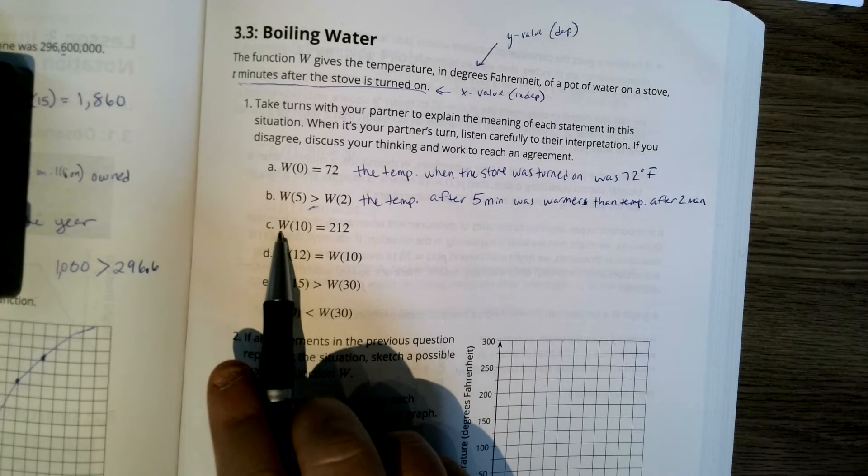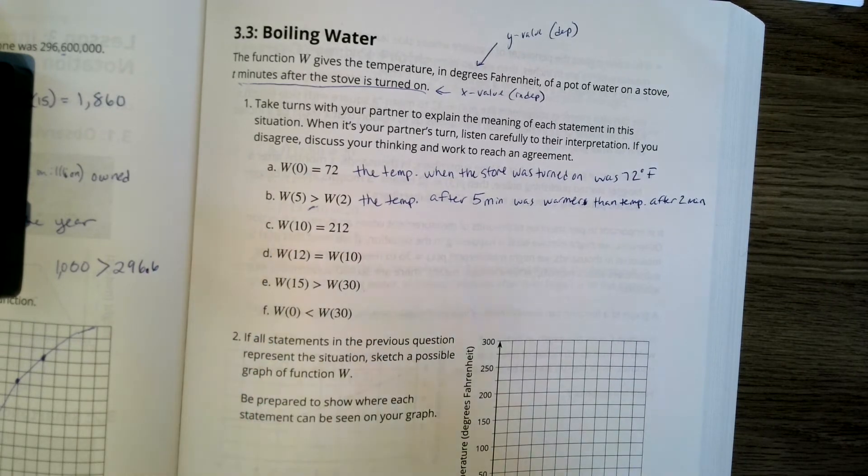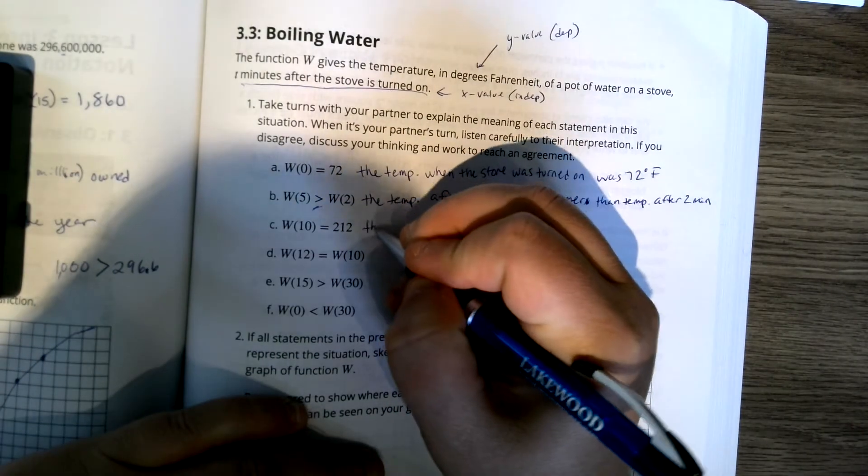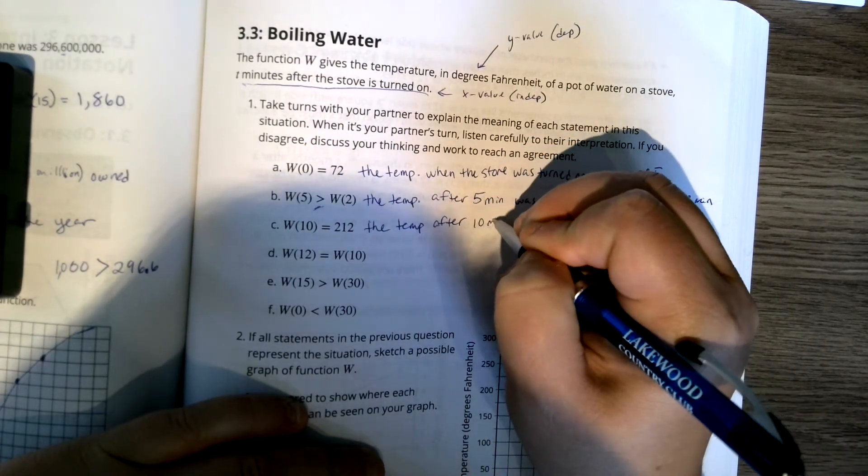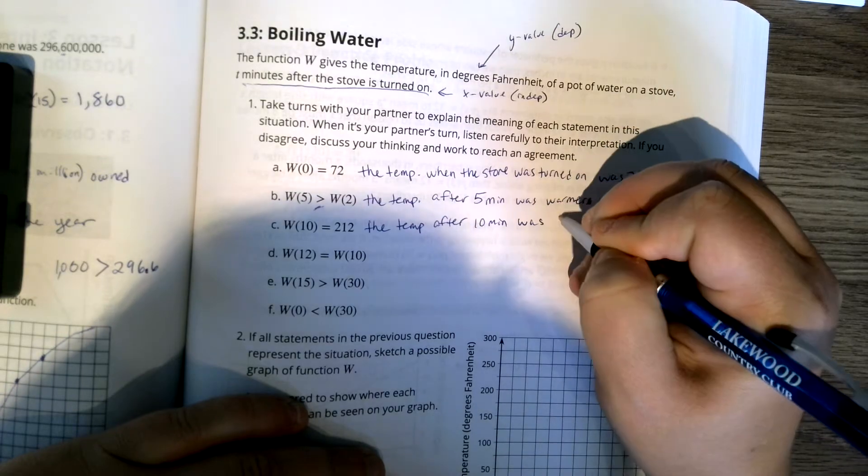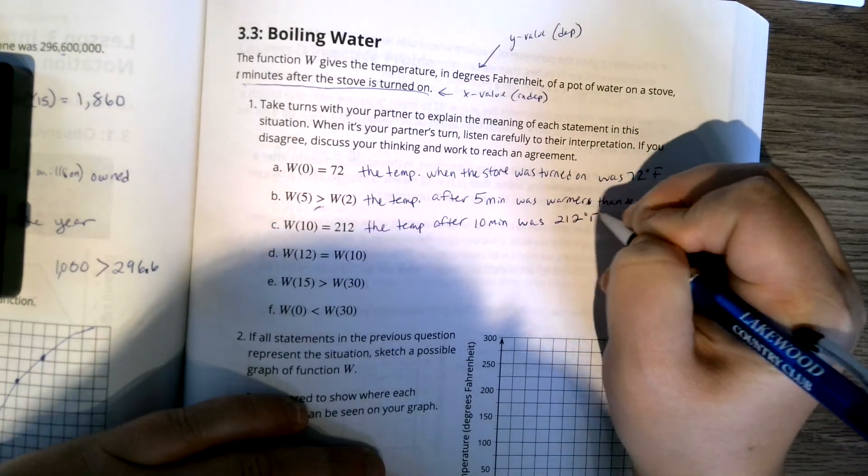The next one, W of 10 equals 212. So again, the temperature after 10 minutes was exactly 212 degrees Fahrenheit.